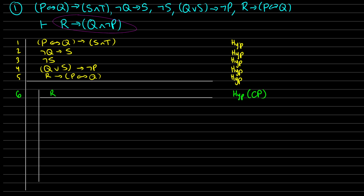Our goal is to get Q∧¬P. It's not quite clear at first how we can do this. What I see right off the bat is in line 5: if we have R, then we have P↔Q. So I'm going to reiterate that because I want to use it for modus ponens. In line 8, I have R; if R then P↔Q, so I'm going to get P↔Q in line 8. That's from lines 6 and 7, modus ponens. The previous line should be reiteration from line 5, not line 6.